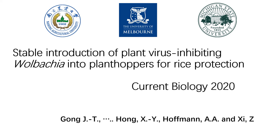This paper represents the first case in which a Wolbachia bacterium has been transferred from one plant hopper to another plant hopper, and as a consequence inhibits the transmission of viruses from one plant to the next plant.